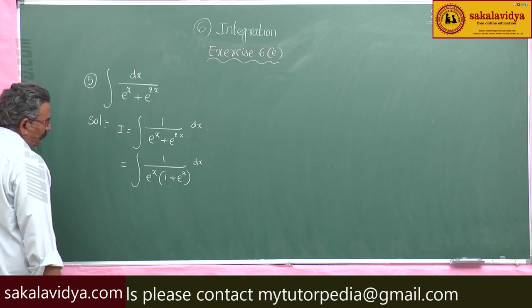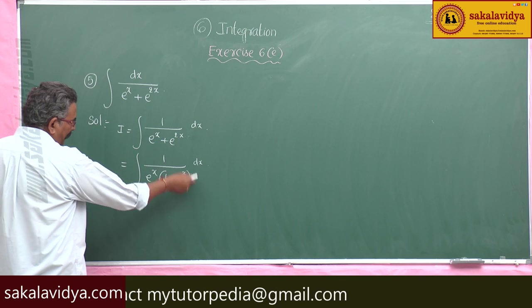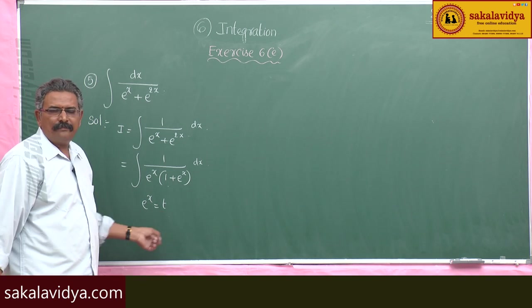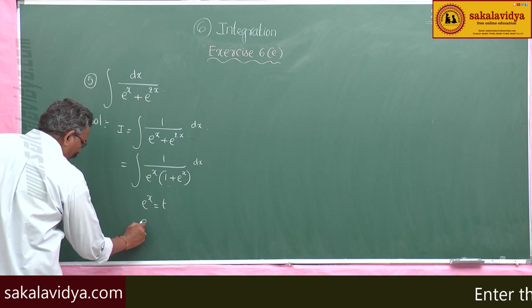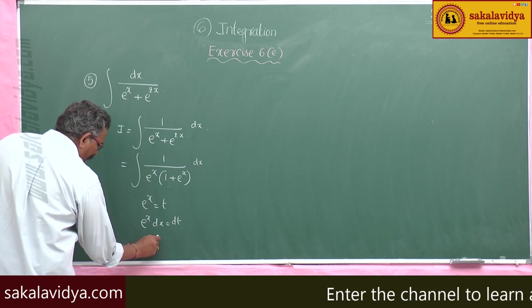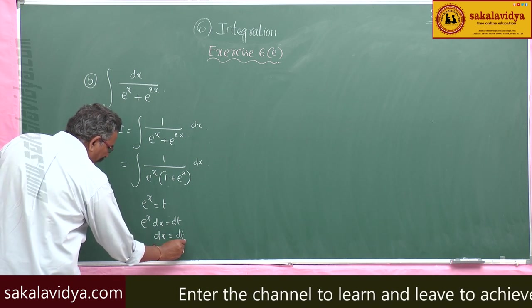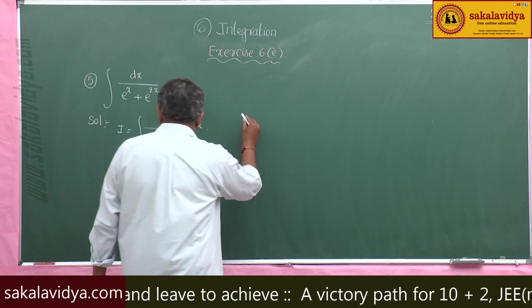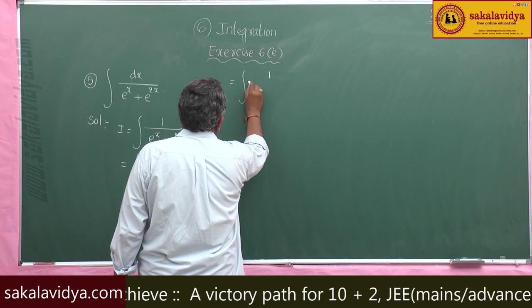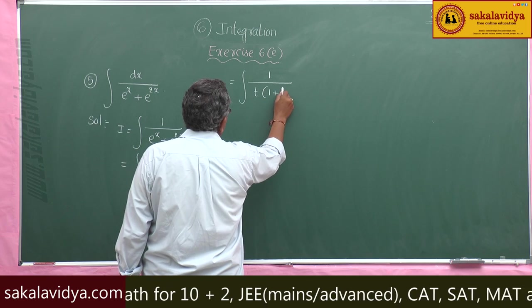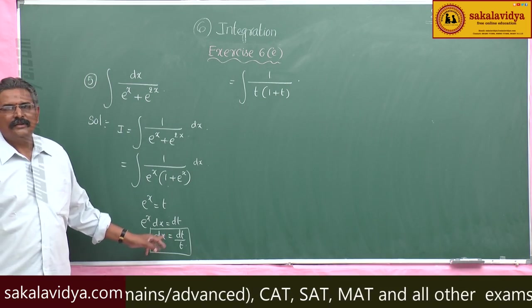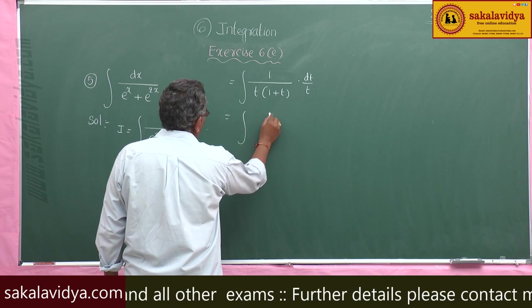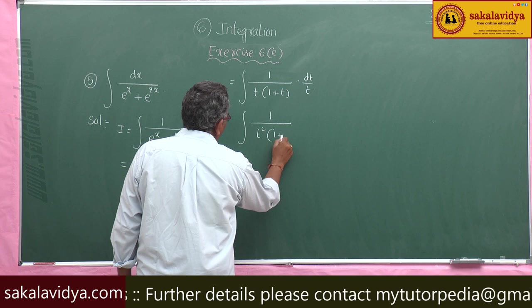Now multiply both numerator and denominator, or use the substitution eˣ = t. Differentiating both sides: eˣ dx = dt, so dx = dt/eˣ = dt/t. After substitution the integral becomes 1/[t(1 + t)] · dt/t, which simplifies to 1/[t²(1 + t)] dt.